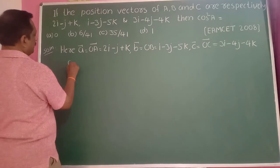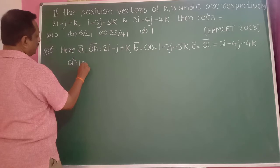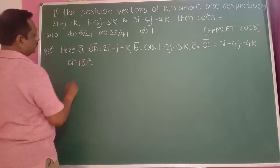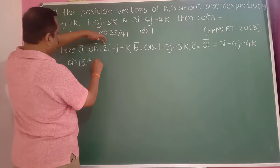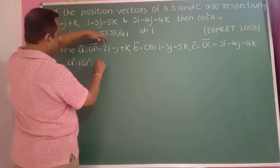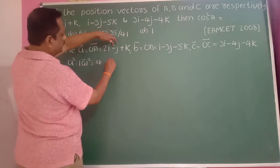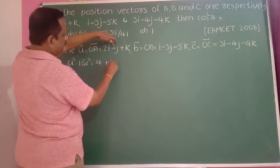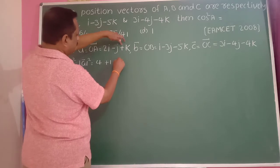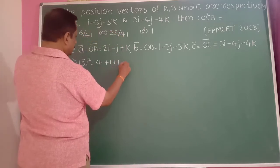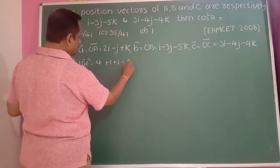A squared is equal to modulus of Ā squared, which equals 2 squared is 4, plus minus 1 squared is 1, plus 1 squared is 1. Therefore, this gives us 6.